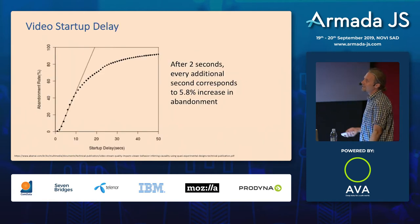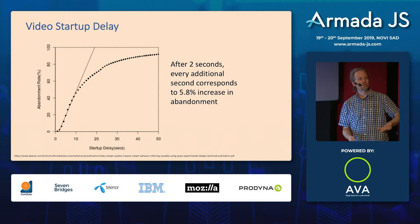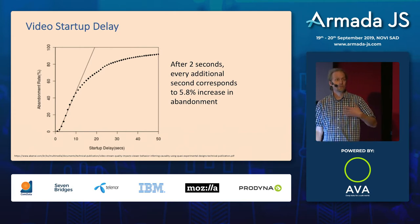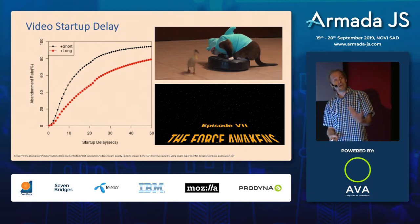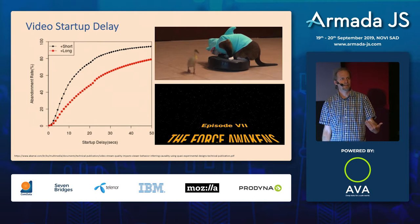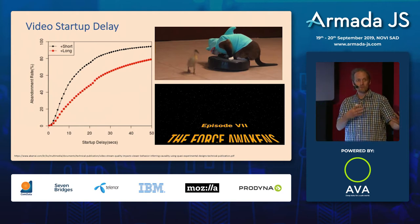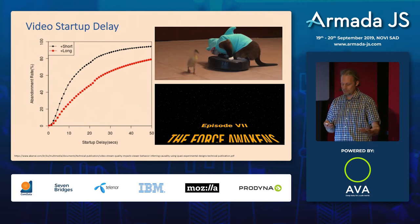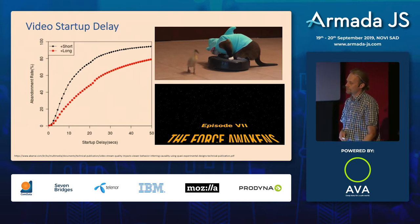Akamai did a study and found that everyone waits about two seconds for a video to start. After two seconds, you lose 6% of your customers every second thereafter — so if it takes three seconds, you've lost 6% of your users. It's different for different video types. For short-play videos like a funny cat clip, people give up much faster. But for a movie or TV show where you've already committed time, you'll wait an extra 10 seconds because you've already locked in that block of time.